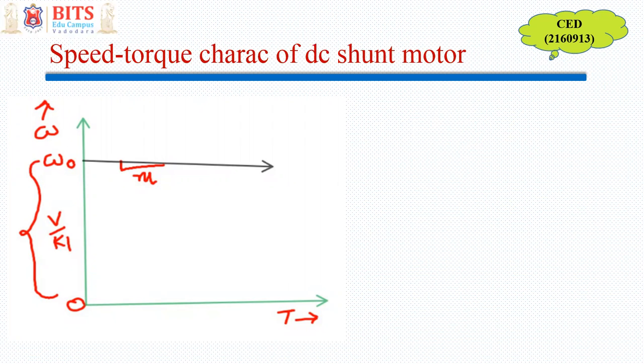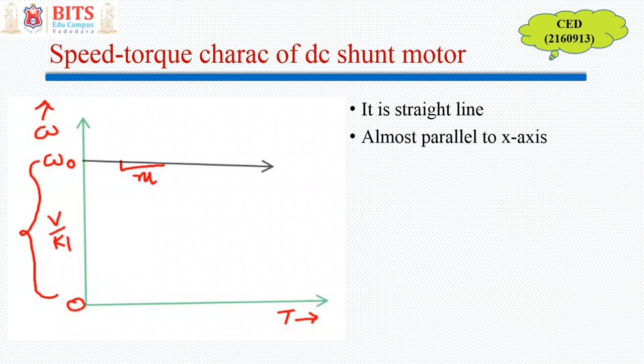And this characteristics, as you can see, is a characteristics of straight line. And it is having very small slope and the intercept is nothing but the V by Kφ that is no load speed. And it is again a straight line parallel to x axis. It is good for constant speed applications.